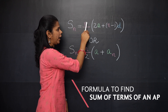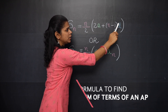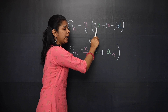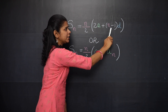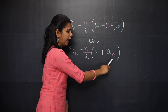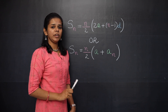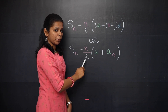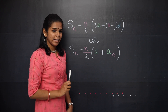SN is equal to n/2 into (2a + (n−1)d). The 2a can be written as a + a, and a + (n−1)d is the nth term, also written as 'l' which means the last term. So there are two formulas and you can choose either one.